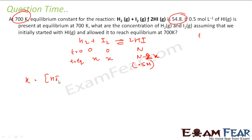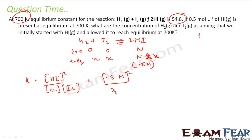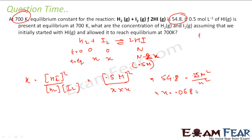So Kc is: concentration of HI squared divided by concentration of H₂ times concentration of I₂. What is the concentration of HI? It is 0.5 M squared. Concentration of H₂ and I₂ are both x moles per liter, so it is x times x. You solve the value of x, since Kc is nothing but 5.48. It is 0.5 M squared divided by x squared.